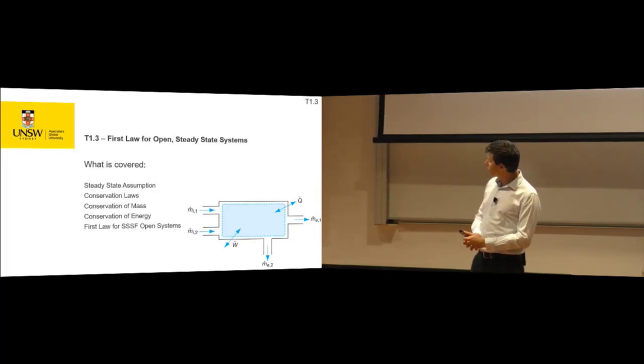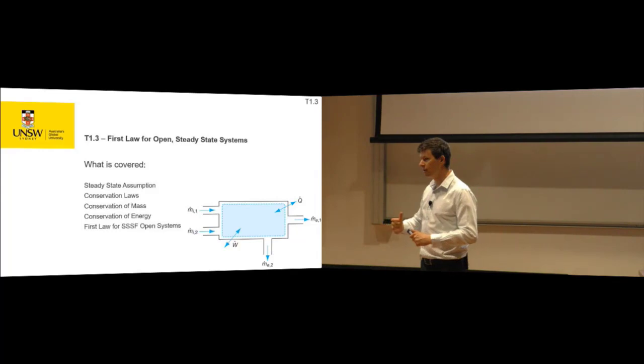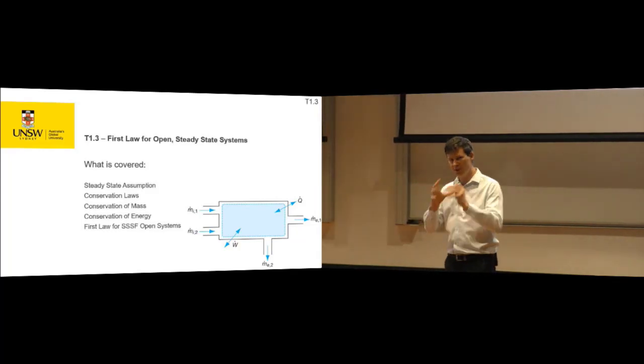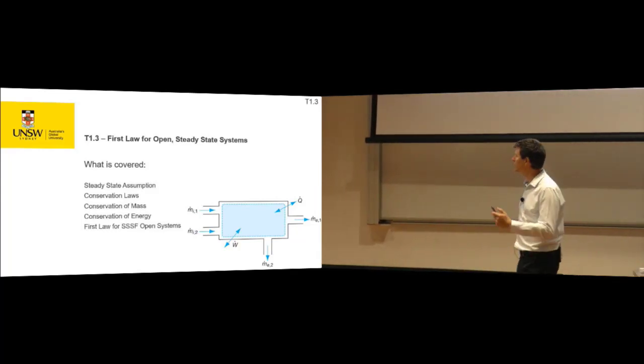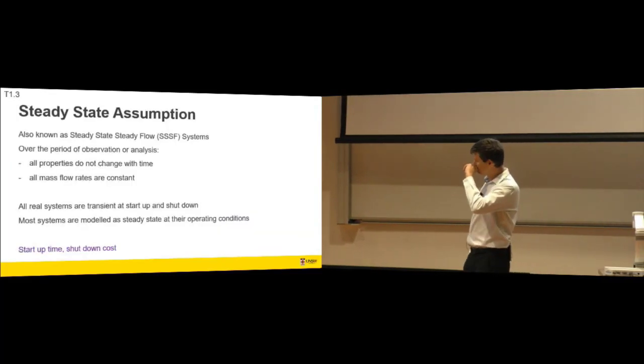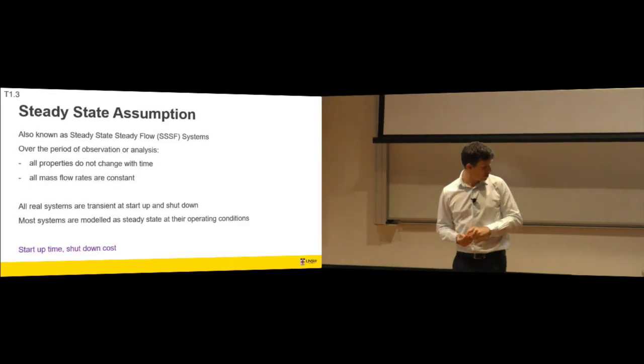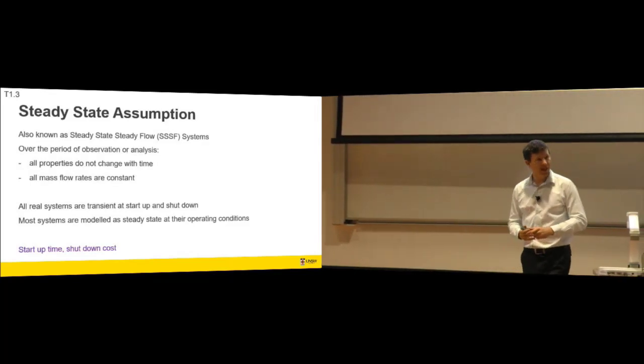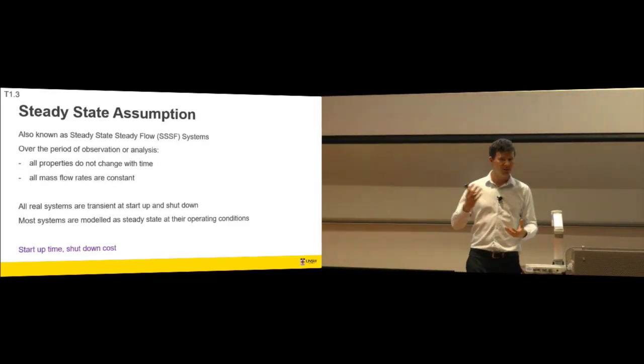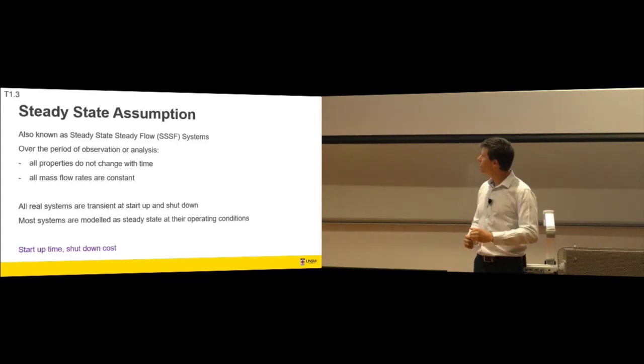We should re-look at our conservation laws in light of the steady-state assumption and then define a mathematical form. This is the first law for steady-state, steady-flow systems. Generally when we're designing the operating condition of a plant or a process, power plant, whatever, we design for steady-state, steady-flow.